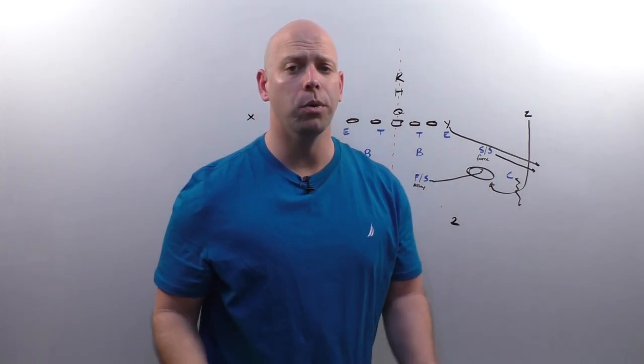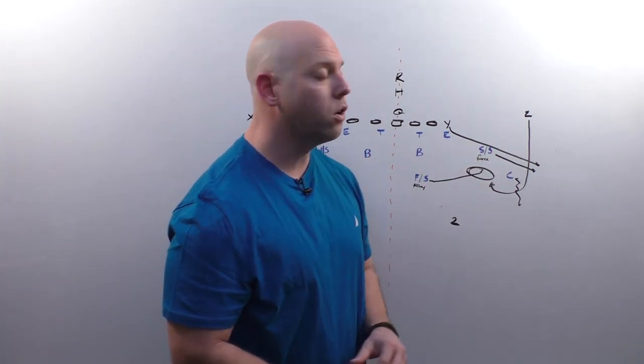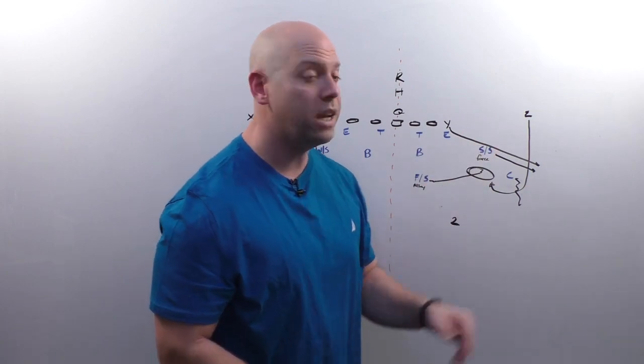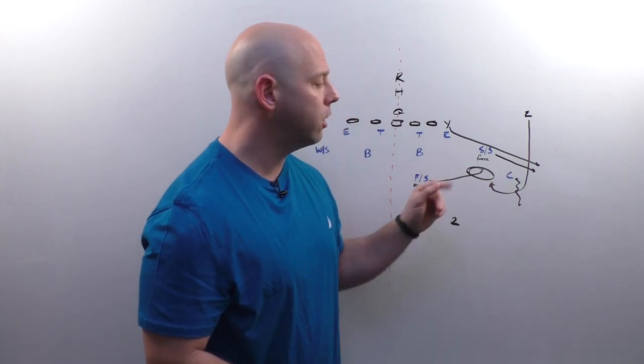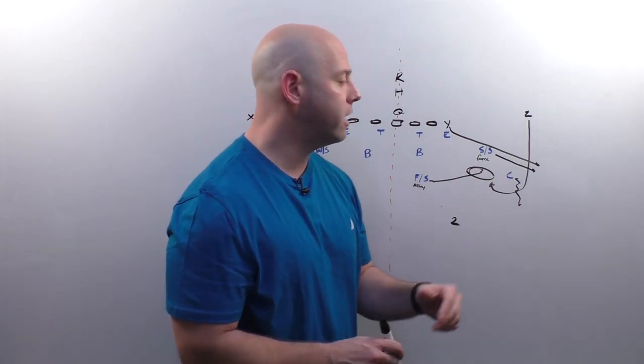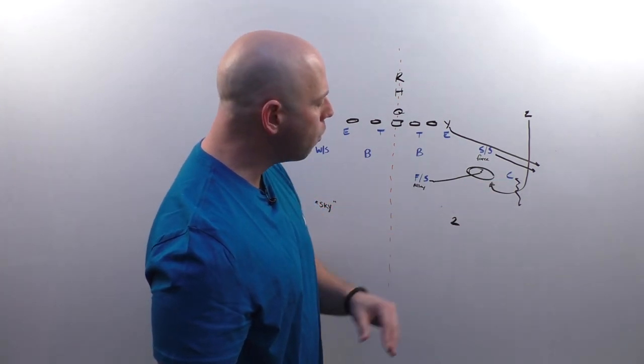So he goes to rob underneath that curl route. And this is where the robber coverage really comes into play because with that corner's reading, that quarterback's reading off that strong safety in the corner, he's expecting now when that strong safety flies to the flat, he's expecting the curl route to be open. We closed that door very quickly because of the fact that we're there for it.